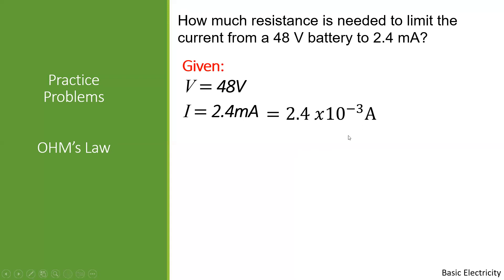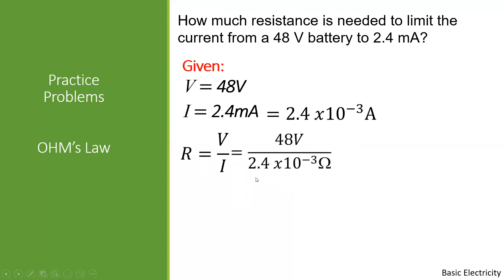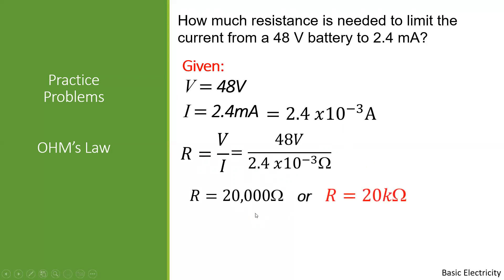Solving for the unknown: R = V / I. Substituting the given values: R = 48 / (2.4 × 10⁻³) = 20,000 Ohms. Or simply, R = 20 Kilo Ohms if written in prefix form.